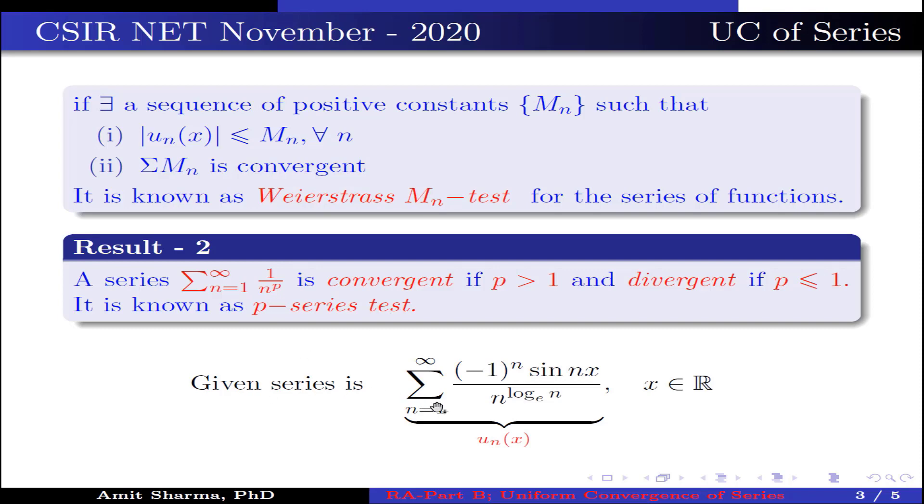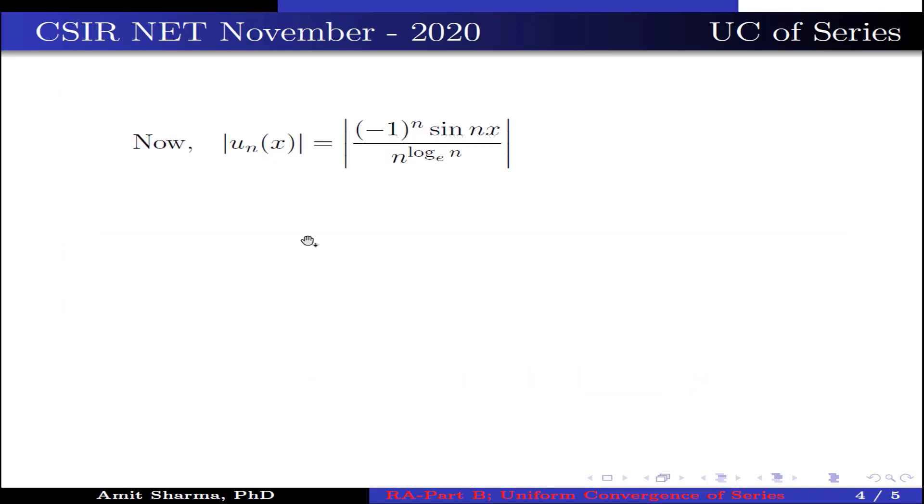Now, the given series is summation n varies from 1 to infinity, minus 1 to the power n sin nx divided by n to the power log n, where x belongs to R. Now let us take this to be u_n(x). Now mod of u_n(x) equals mod of minus 1 to the power n sin nx divided by n to the power log n, which equals mod of 1 over n to the power log n, which is less than or equal to 1 by n squared for all n. This is represented by M_n.